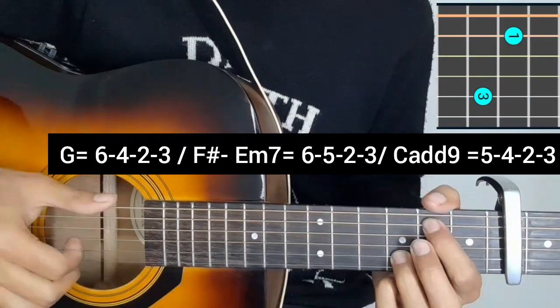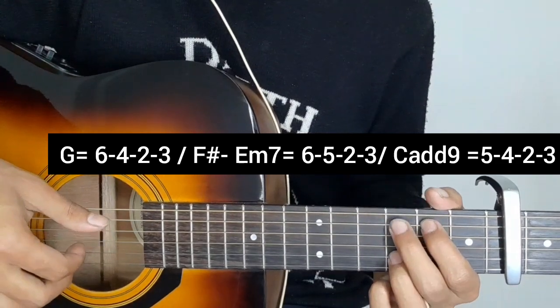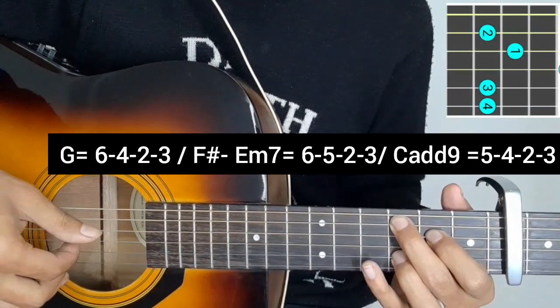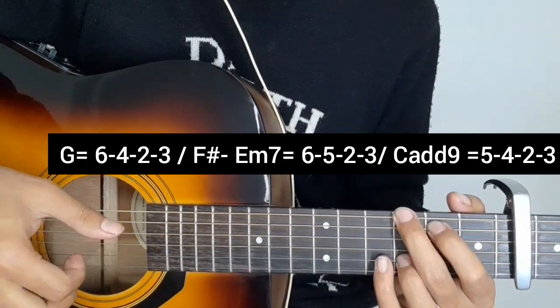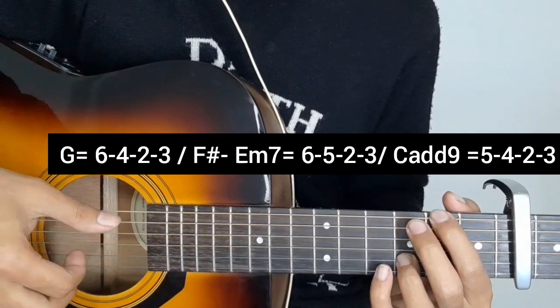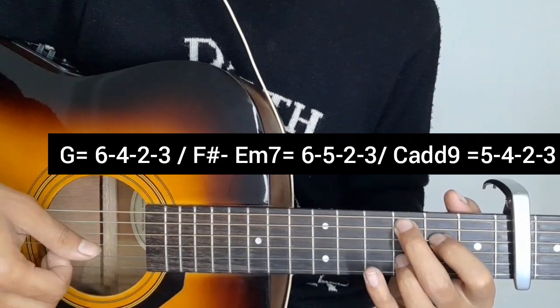For Em7, the plucking pattern is 6-5-2-3. Then for Cadd9, the plucking pattern is 5-4-2-3. So the pattern changes: G chord, then Em7, then Cadd9.